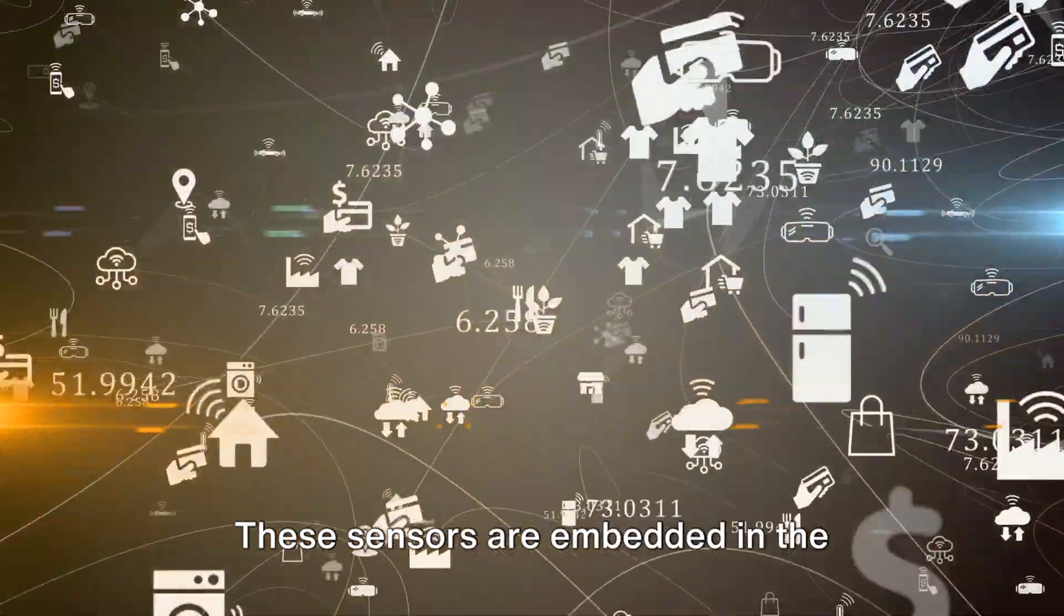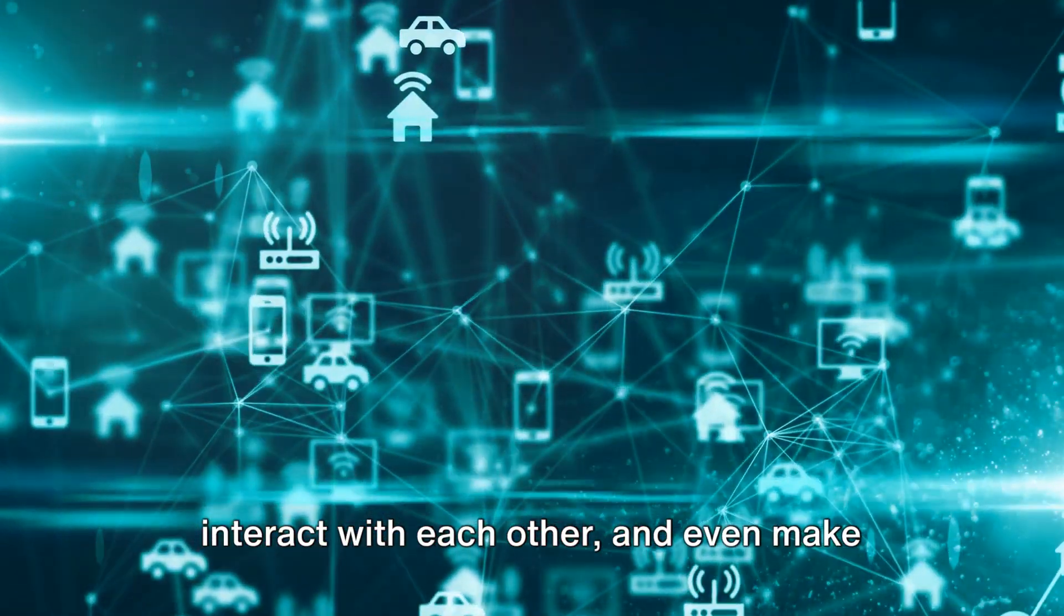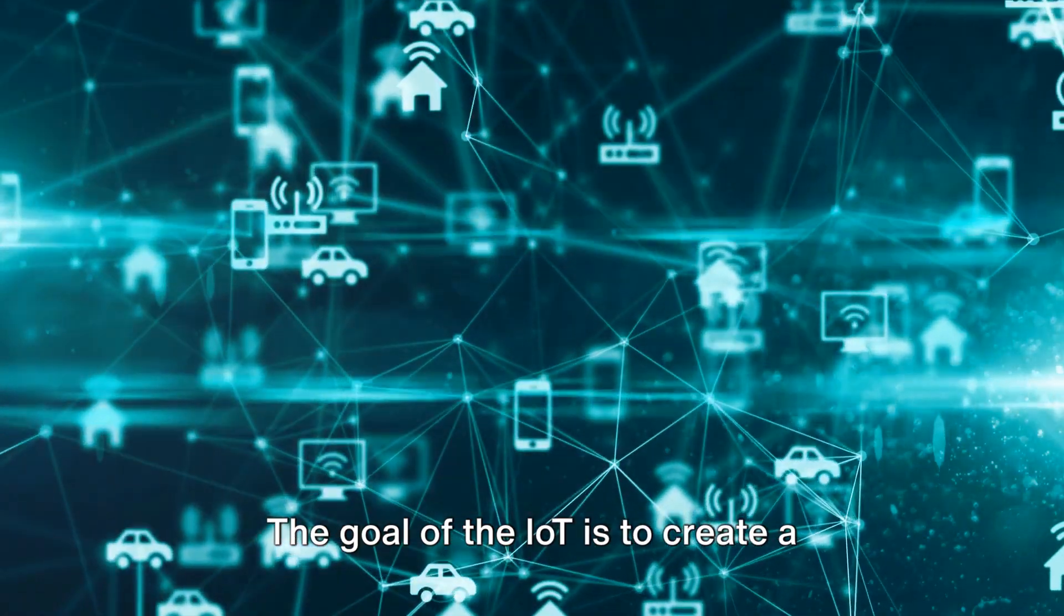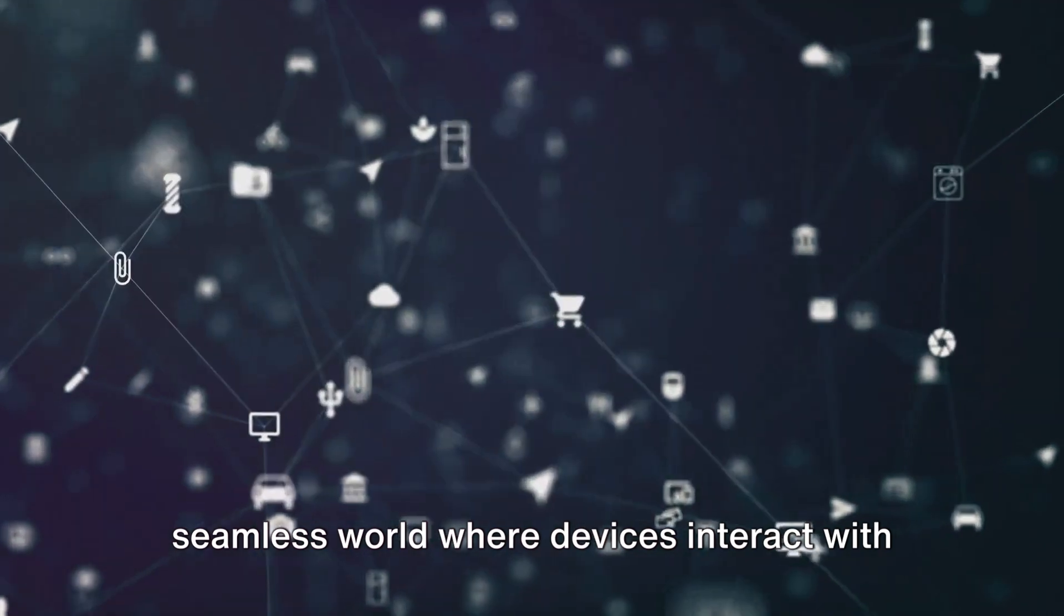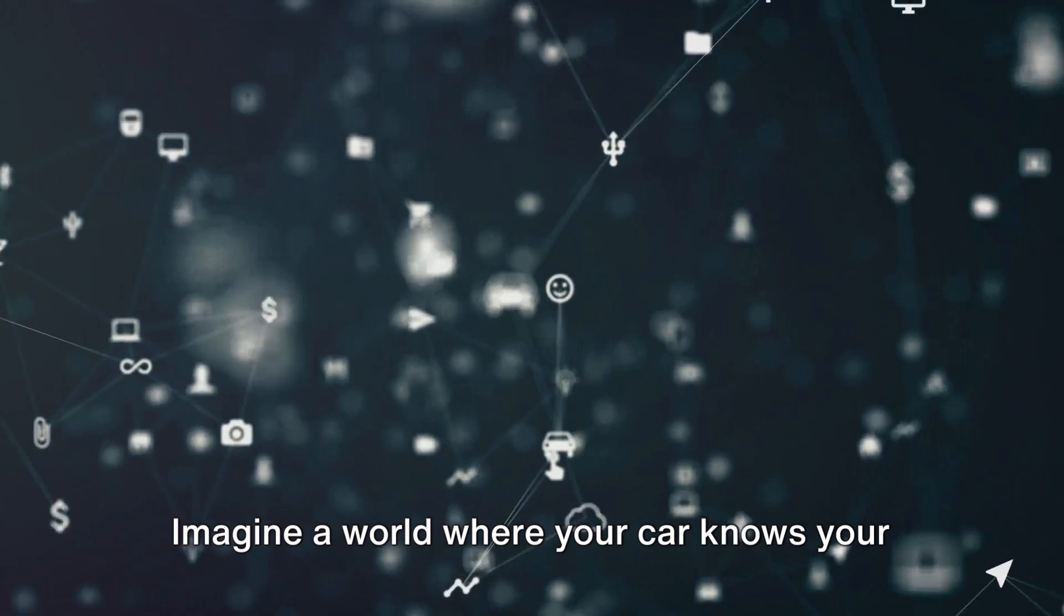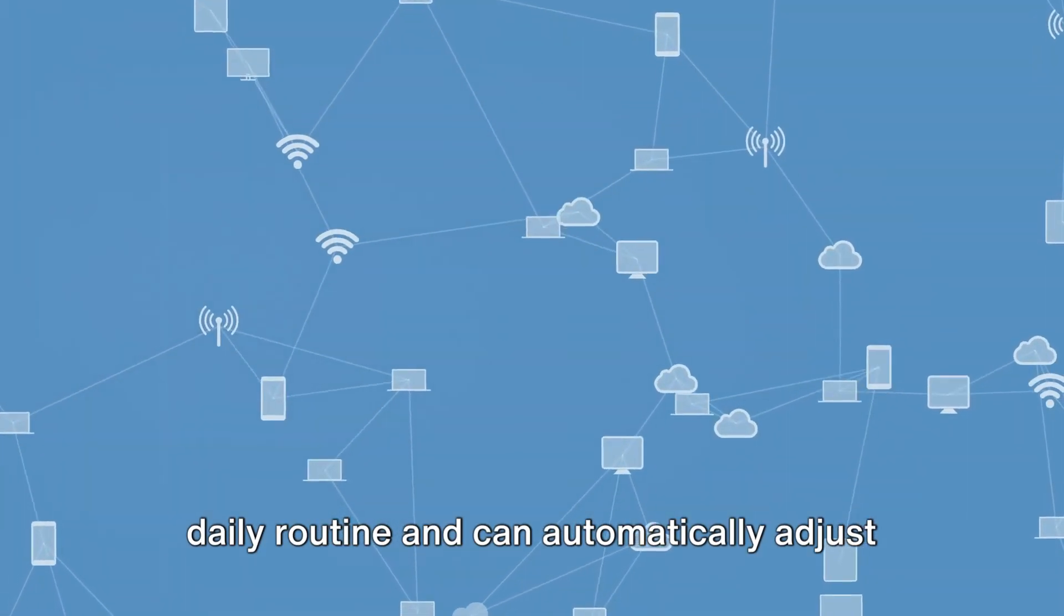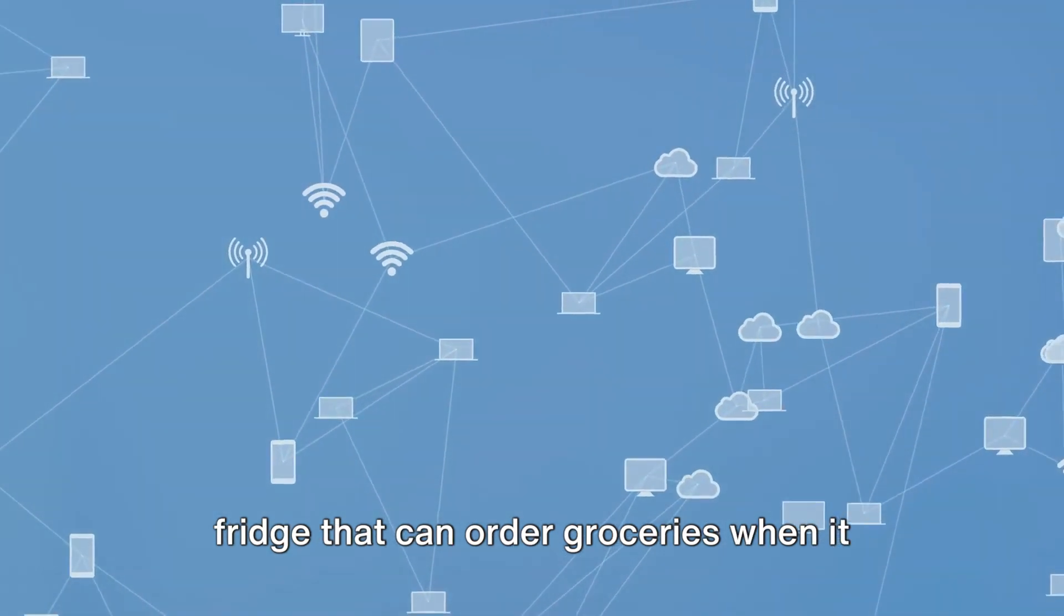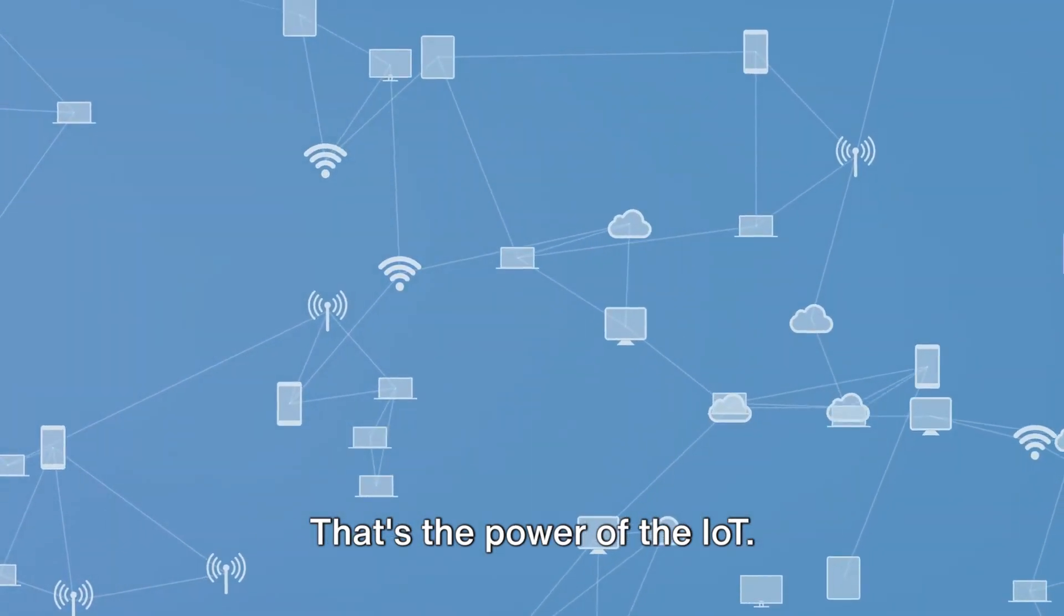These sensors are embedded in the devices, enabling them to collect data, interact with each other, and even make decisions based on the information they gather. The goal of the IoT is to create a seamless world where devices interact with one another to make our lives easier and more efficient. Imagine a world where your car knows your daily routine and can automatically adjust its settings to suit your schedule, or a fridge that can order groceries when it detects that you're running low on certain items. That's the power of the IoT.